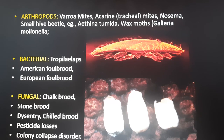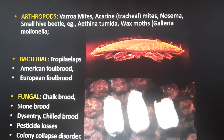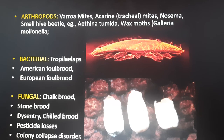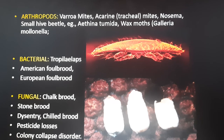The bacterial parasites include Tropilaelaps, American foul brood, and European foul brood. The fungal pests are the chalk brood and the stone brood, which also causes dysentery and colony collapse disorder.